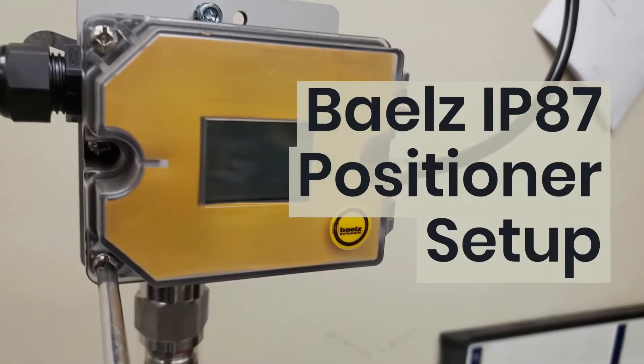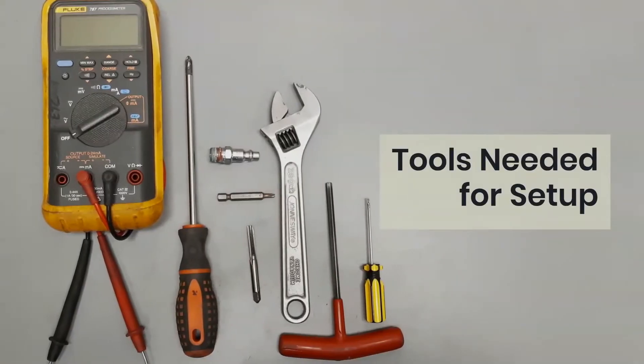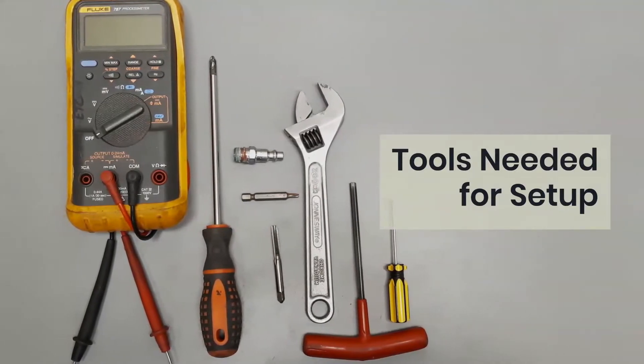Bales IP87 Positioner Setup. Tools needed for setup: Phillips head screwdriver, a wrench, and a Fluke process meter.